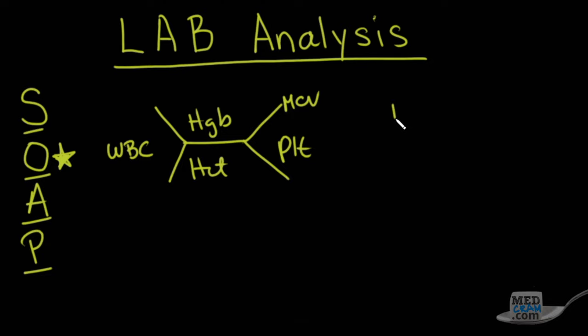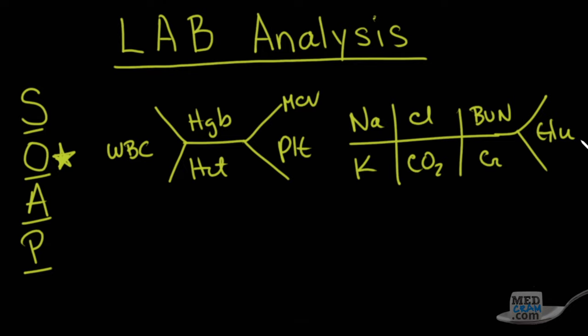And we're also going to talk about, in this series, the CHEM-7, specifically the sodium, the potassium, the chloride, the CO2 or the bicarb, the BUN, the creatinine, and the glucose. So objective measurements, how to read them, how to look at them, and what to do about them.